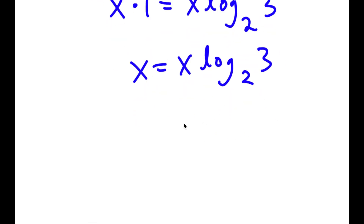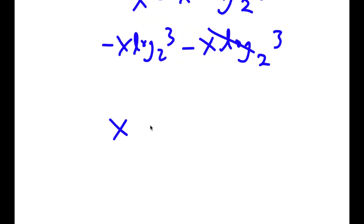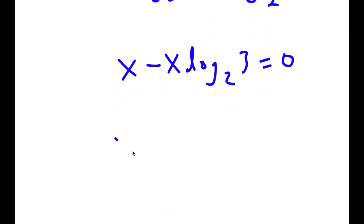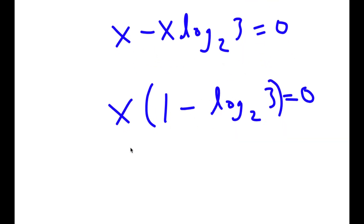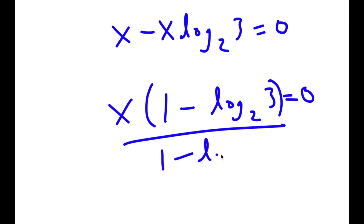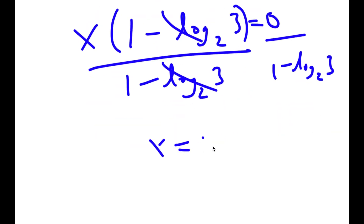Now I'm going to subtract x times log base 2 of 3 from both sides. So I get x minus x times log base 2 of 3 is equal to 0. If I factor out x, I get x times (1 minus log base 2 of 3) equals 0. And if I divide both sides by (1 minus log base 2 of 3), these cancel out and I'm left with x is equal to 0.